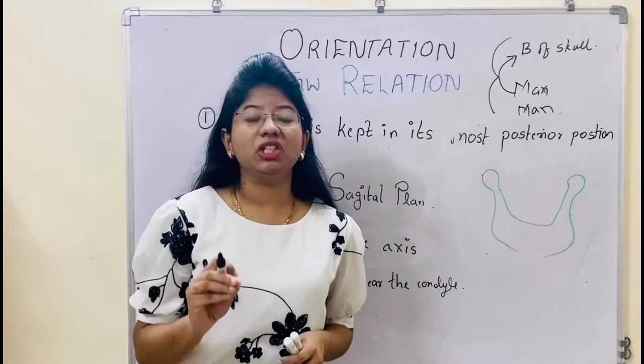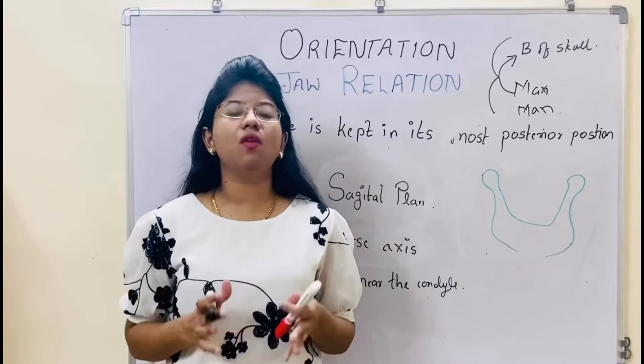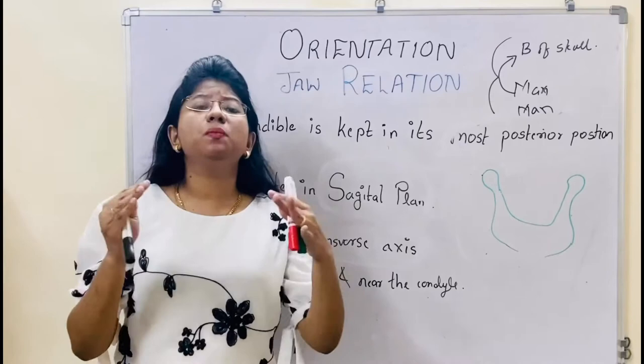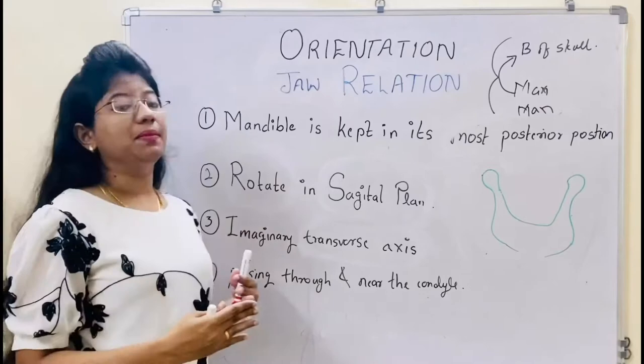So first of all we will see the definition of orientation relation. What does orientation relation mean? It says when the mandible is kept in its most posterior position — that is, it is in the most posterior position — at that time, in the sagittal plane.